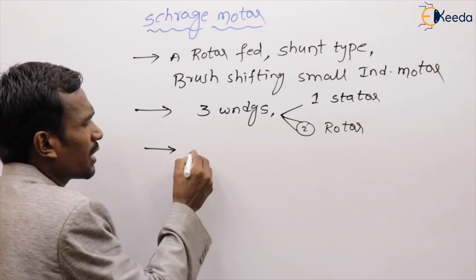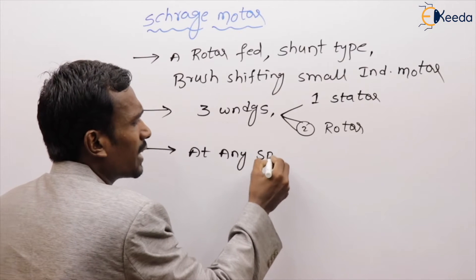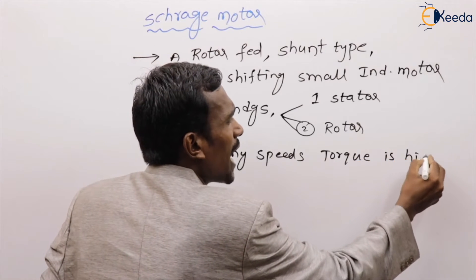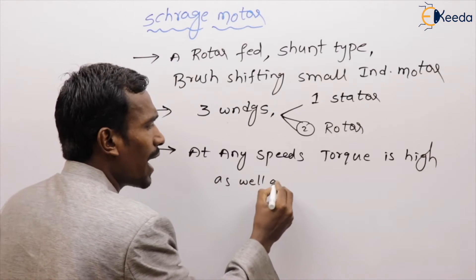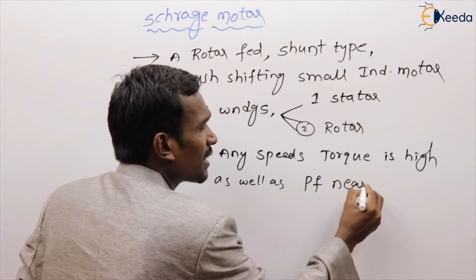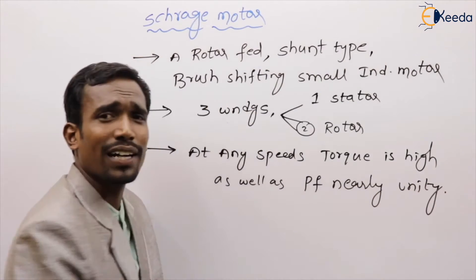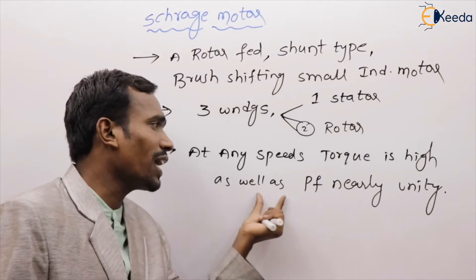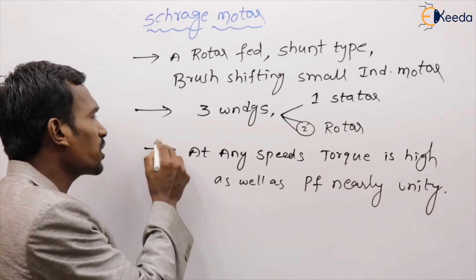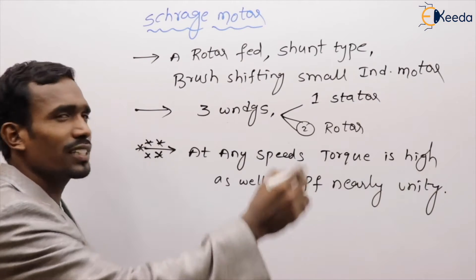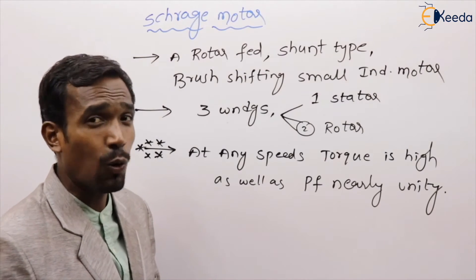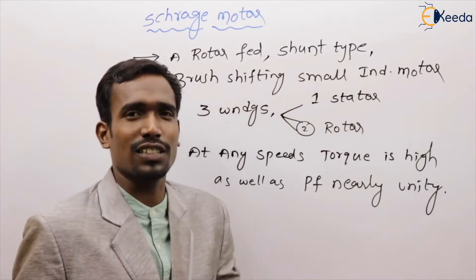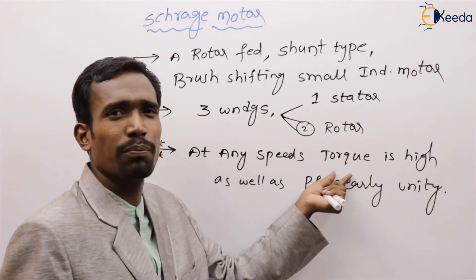Generally in this machine, at any speed, the torque is very high as well as the power factor is nearly unity. This is the most important advantage of the Schrage Motor — the main reason we use it in industries is because of the unity power factor and high starting torque. This is a very important repeated exam question.